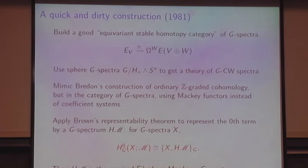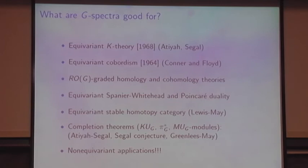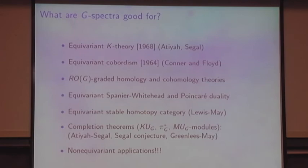G-spectra are good for all sorts of classical things. The amazing thing is that this development of equivariant stable homotopy theory has unexpected non-equivariant applications in which there's simply no rhyme or reason for thinking equivariance would play a role at all. I'm going to describe in the minutes remaining the most striking example, which is the equivariant Arf invariant problem.